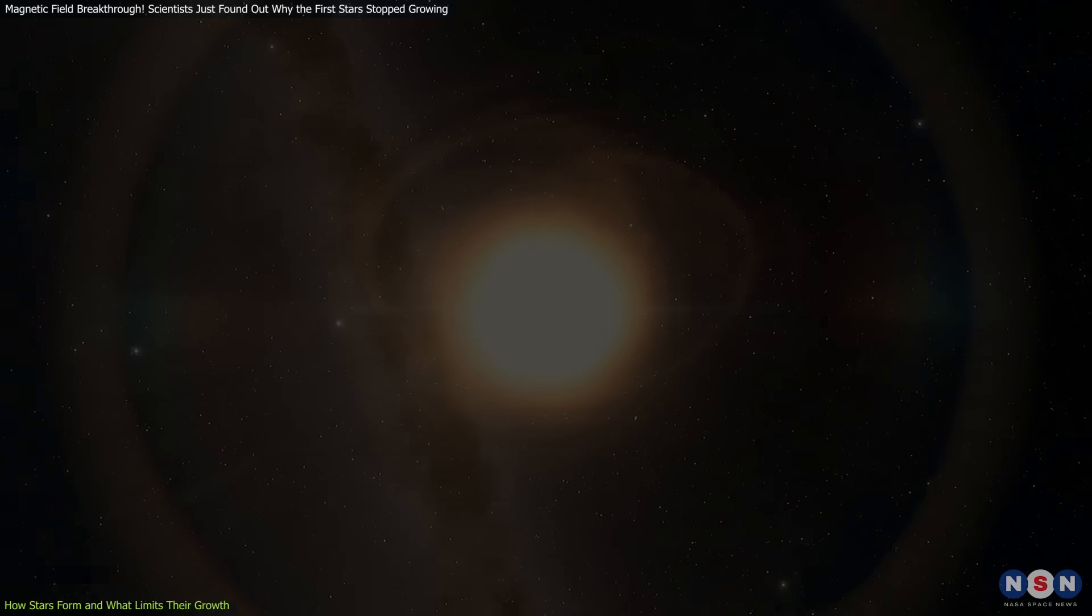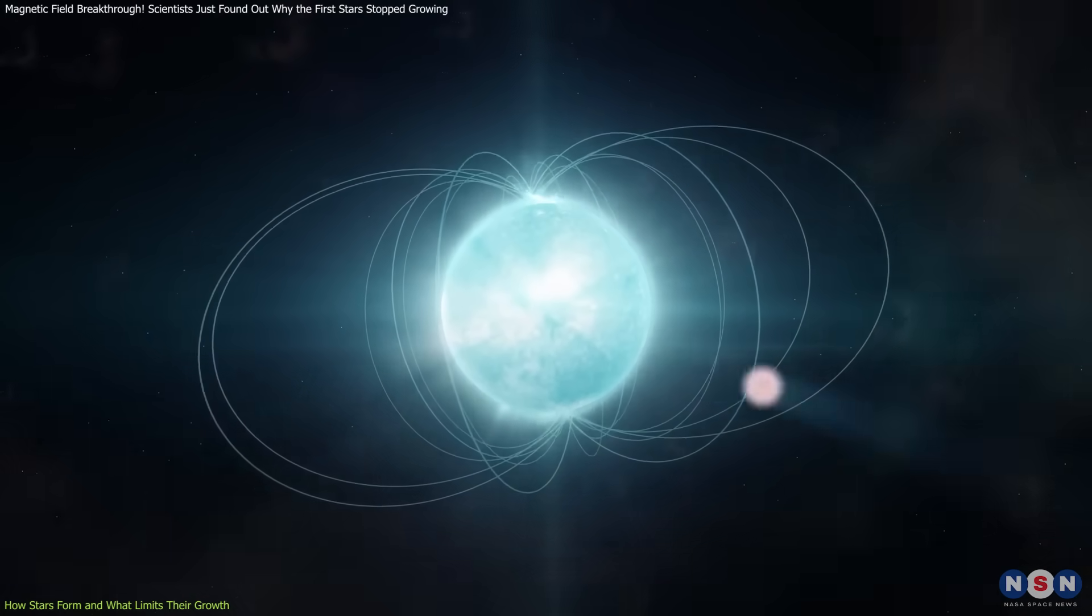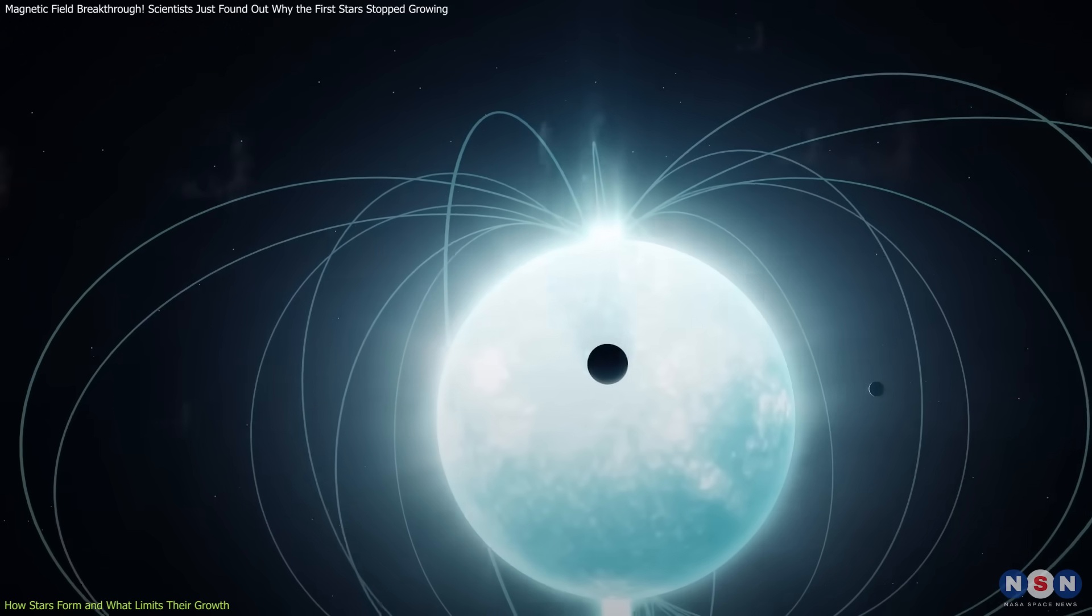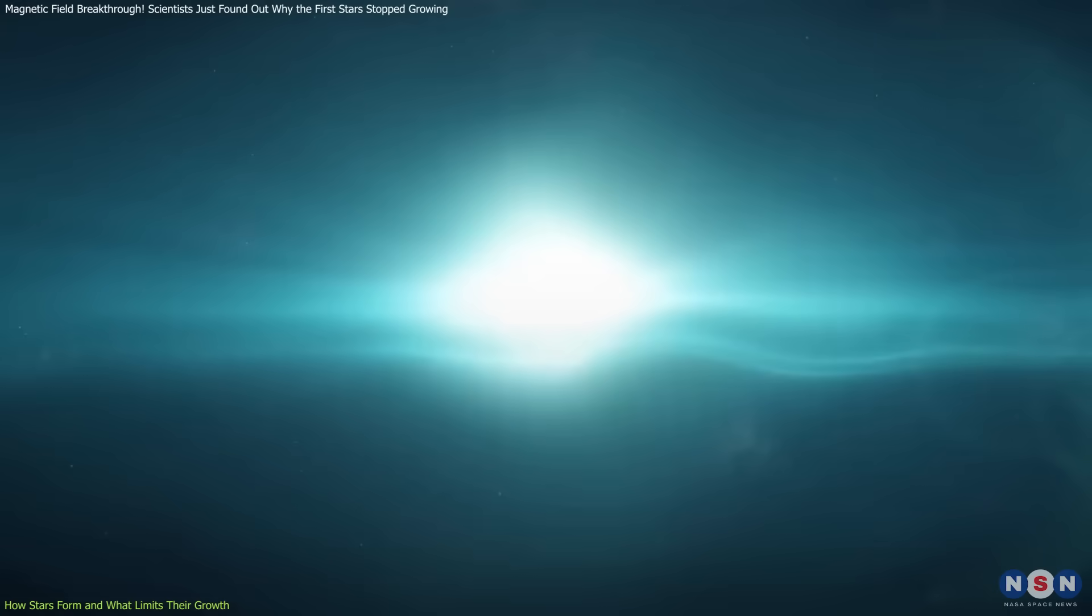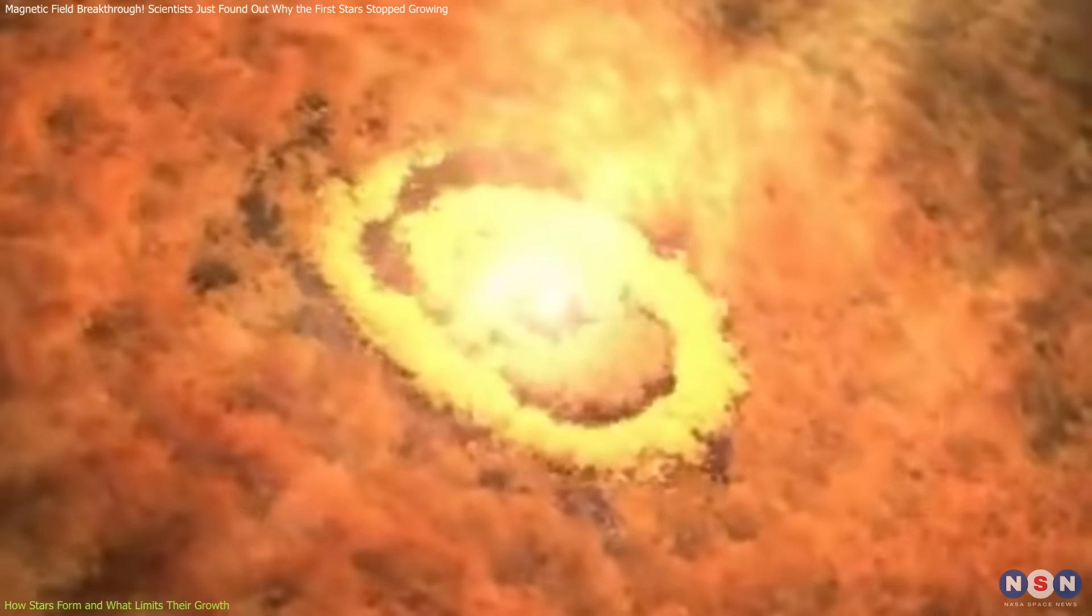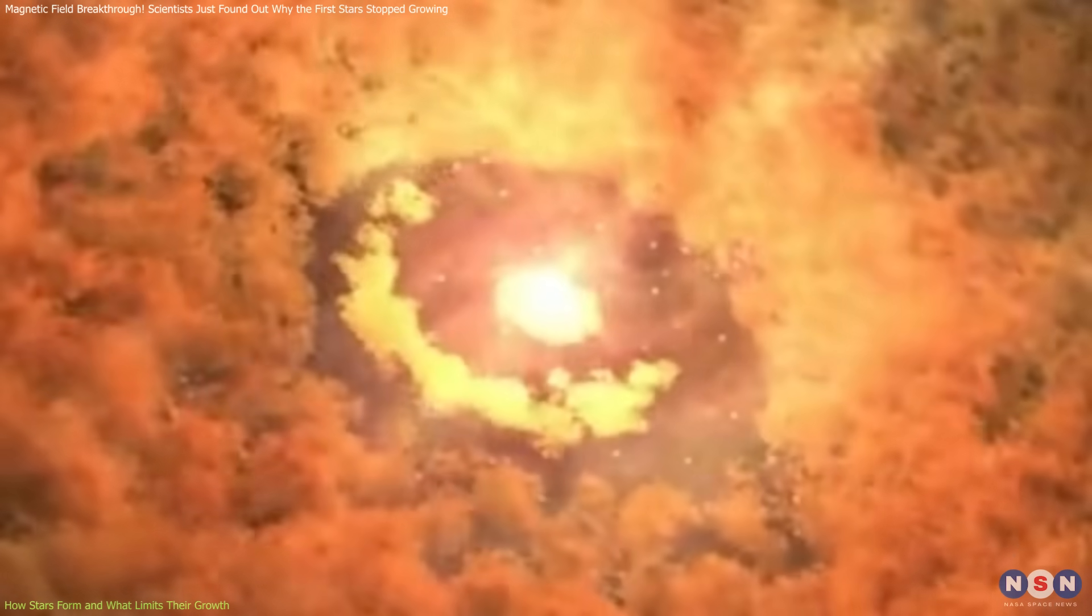Another crucial factor is magnetic fields. As young stars rotate, they generate strong magnetic fields, which drive stellar winds, powerful streams of charged particles that blow away surrounding gas. These winds further limit the amount of material the star can absorb, capping its size.